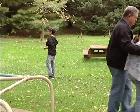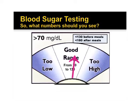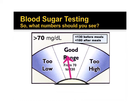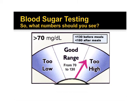The usual range for blood sugar for people with diabetes is between 70 and 130 milligrams per deciliter before meals and less than 180 milligrams per deciliter after meals. Blood sugar goals are individualized for each person. However, action is necessary whenever the blood sugar drops below 70 or rises above 240.